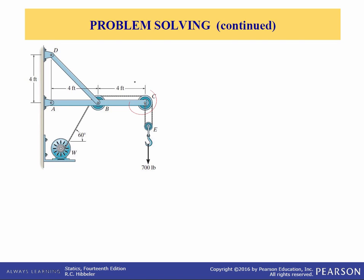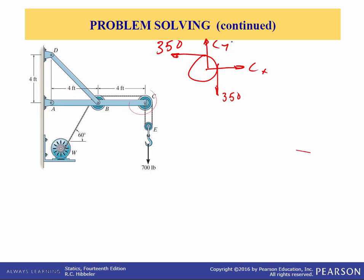Now drawing the free body diagram of pulley C. The tension is 350 pounds on each side, and we have the pin reactions C_x and C_y. Summing forces in the X and Y directions, it is clear that C_x equals 350 pounds and C_y equals 350 pounds.